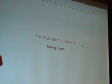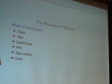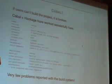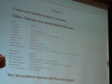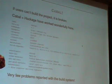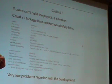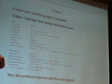So how do we make it work? The reliability toolkit: Cabal, -Wall, QuickCheck, HPC. Cabal is good for reliability — you don't have to worry about the build system breaking, which used to happen a lot when we had makefiles for writing libraries. Things were permanently broken basically. Cabal just makes this whole thing work — we depend on a bunch of packages and the system builds them.